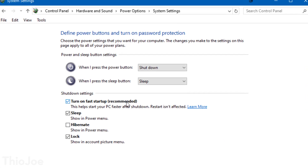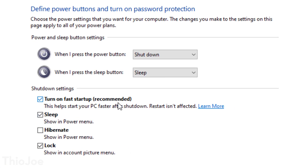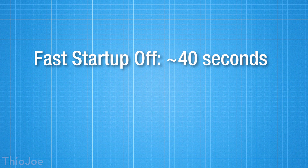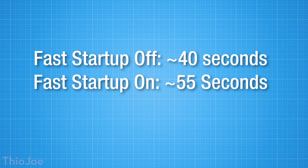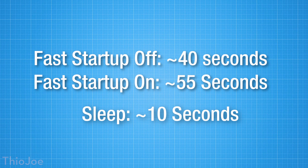I wanted to see how this setting affected boot time on my computer, so I timed from the moment I pressed the power button to when the Windows desktop first appeared. With Fast Startup on, it was about 40 seconds; with Fast Startup off, it was about 55 seconds. That's a significant difference — though I do have a fast NVMe M.2 SSD, so on a hard drive it would probably be a much bigger gap. Just for curiosity, from Sleep Mode it was only about 10 seconds, so clearly Sleep is much faster.